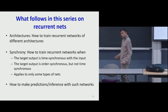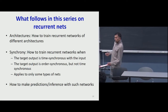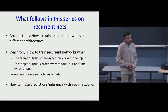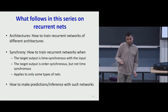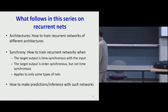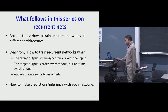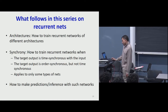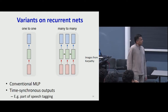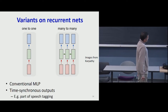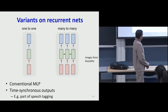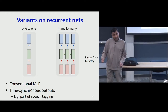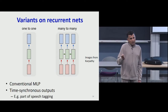You can have different kinds of synchronies. You can have a model where the target output is time-synchronous with the input, meaning any time an input comes in, the network produces an output. Or the target output is order-synchronous: in response to a sequence of inputs, the network produces a sequence of outputs whose order depends on the order of inputs, but the number of outputs may differ from the number of inputs. The figure to the left shows no recurrence — just a conventional multi-layered perceptron. The figure to the right is a recurrent network where a sequence of inputs comes in and the network produces a sequence of outputs, one for every input — time-synchronous.